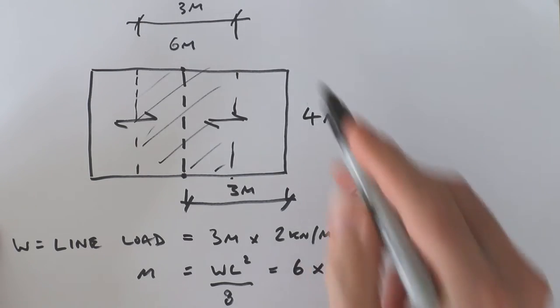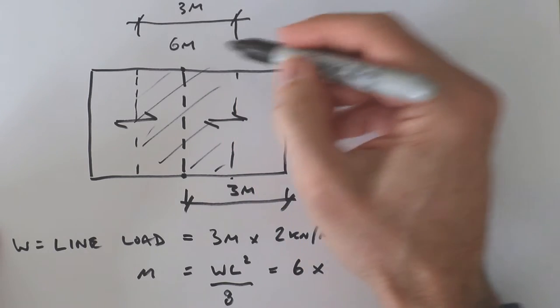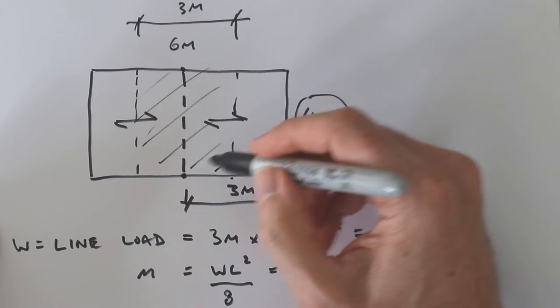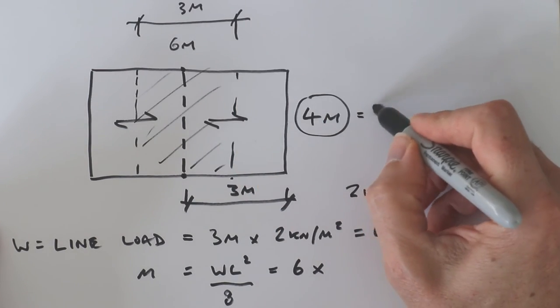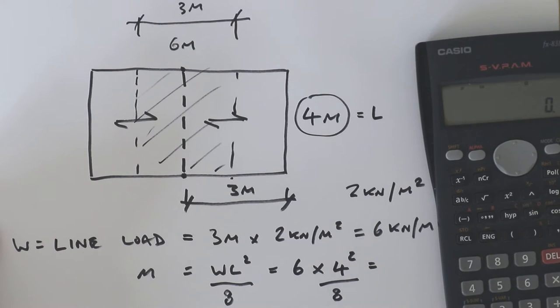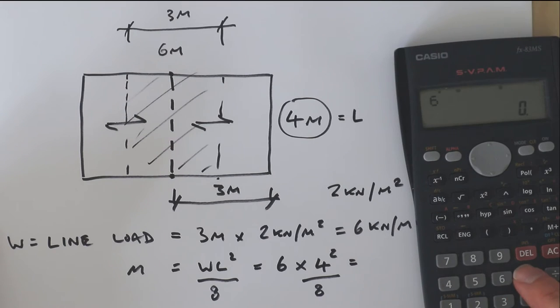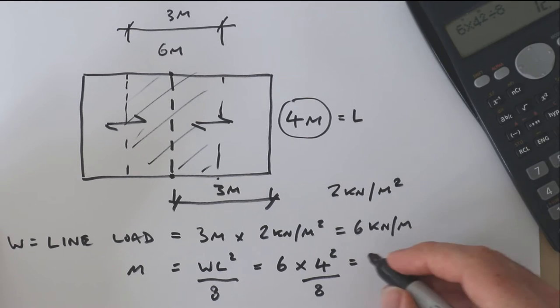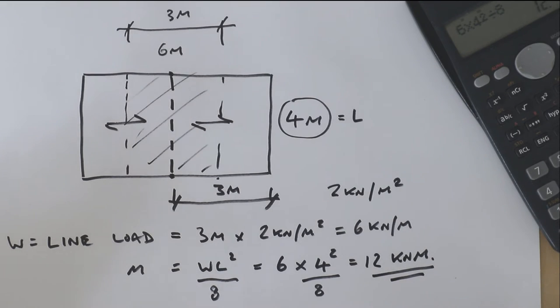And l is the dimension here, four meters, which is the span of the beam. Six times four squared over eight. Let's do this calculation: 6 × 4² ÷ 8, and the answer is 12. 12 kilonewton meters. So that is the moment, and that's the value which you're going to use to design the flitch beam.